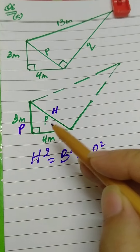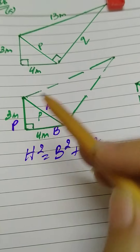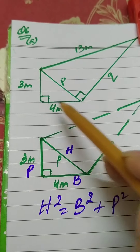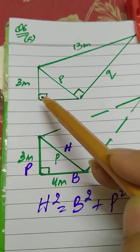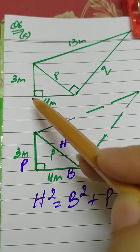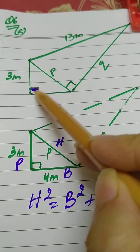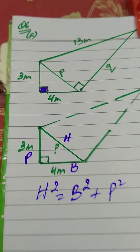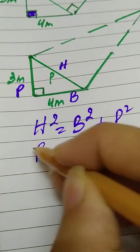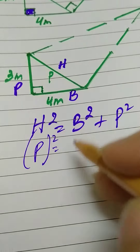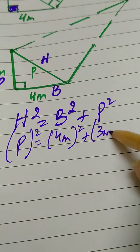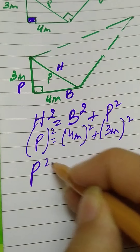We apply Pythagoras theorem to the smaller right-angle triangle because two sides are given and the third is unknown. The two shorter sides — base and perpendicular — are given. The hypotenuse is p. So: p squared equals base squared plus perpendicular squared. The base is 4 meters and the perpendicular is 3 meters.